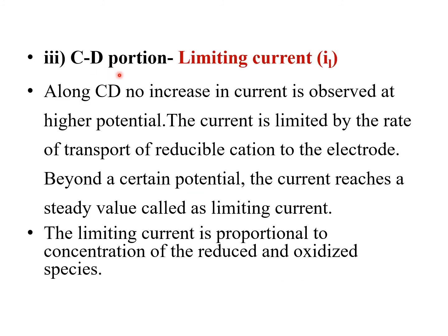The CD portion is the limiting current (IL). Along CD, no increase in current is observed at higher potential — the current is limited by the rate of transport of reducible cations to the electrode. Beyond a certain potential, the current reaches a steady value known as the limiting current, which is proportional to the concentration of the reduced or oxidized species.